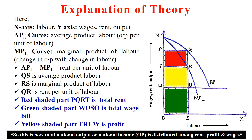The difference between QS and RS, which is QR, is the rent per unit of labor. The red shaded region PQR is the total rent. The green shaded region below the subsistence wage rate, WUSO, represents the total wage bill. The remaining yellow shaded region TRUW represents the profit. This figure explains how the total national output OP is distributed among rent, profit, and wages.